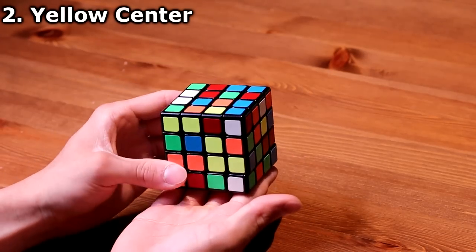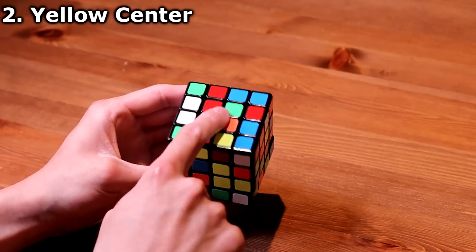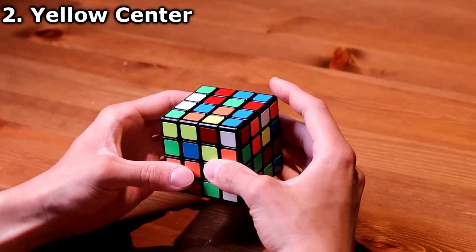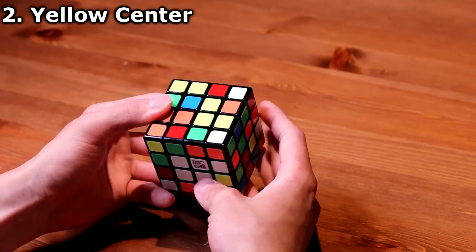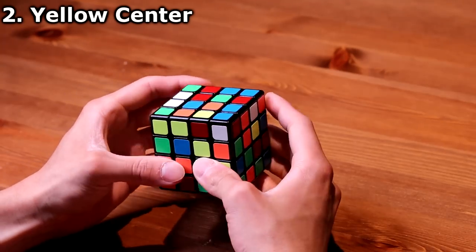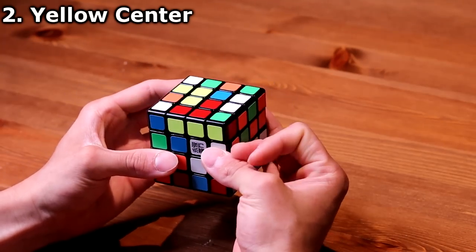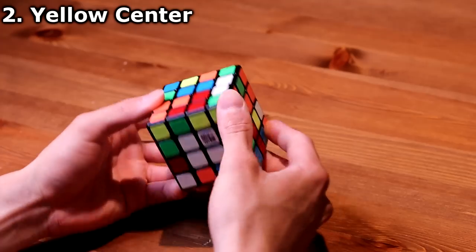And then the white will be on the bottom. If I want to move that up to the top layer, which it belongs, it messes up the white center piece. But I can do so if I move it up, turn the top layer twice, put it back down,